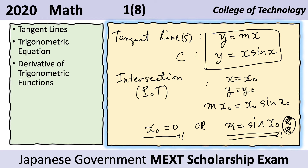Any line that goes through the origin has the following form: y equals mx, because the y-intercept is zero, and so we do not have a plus b, where m is the slope. We can say that the tangent lines we're looking for must have this form. And this here is just from the equation of the curve that it must be tangent to.